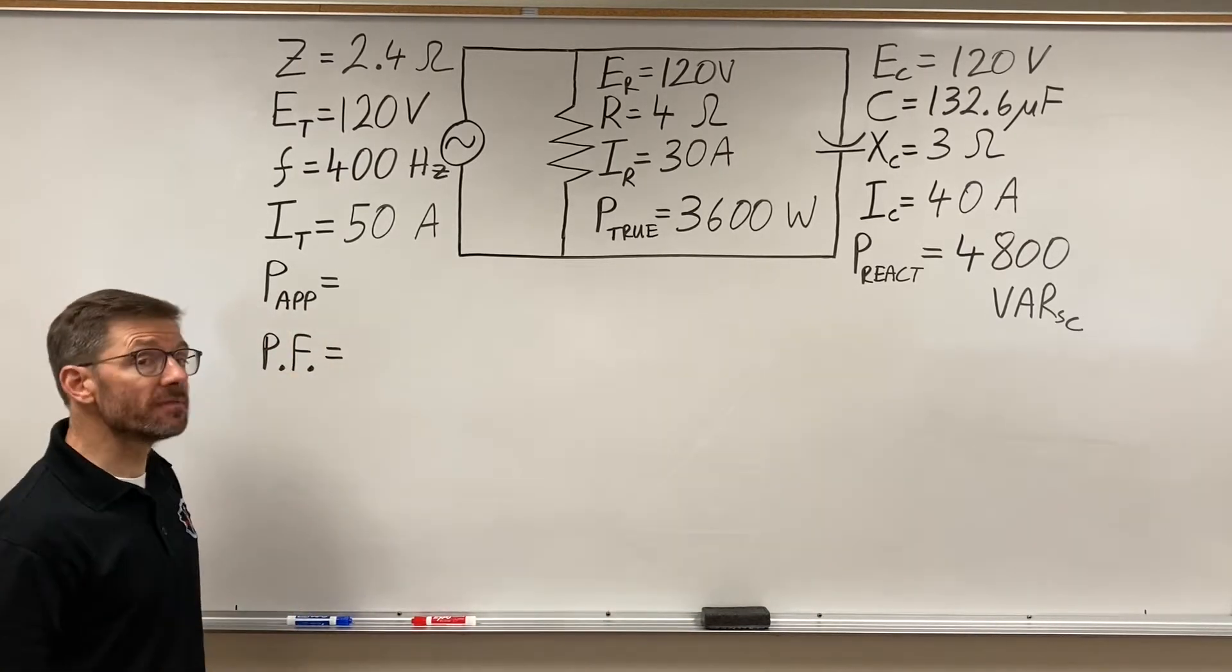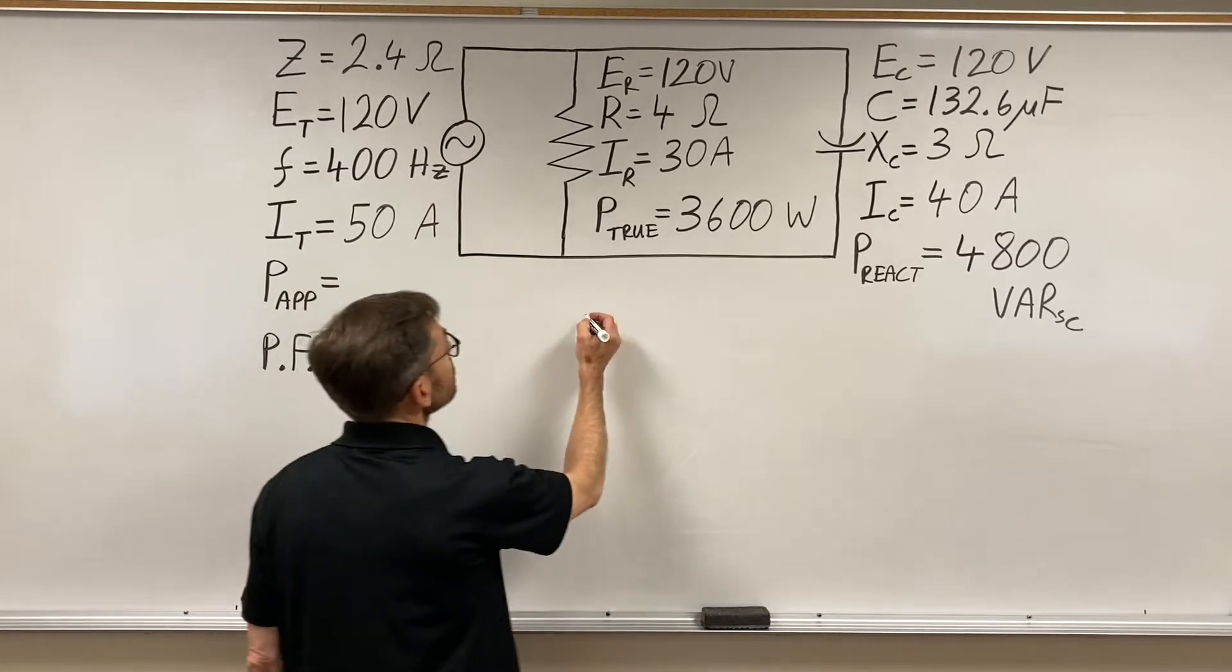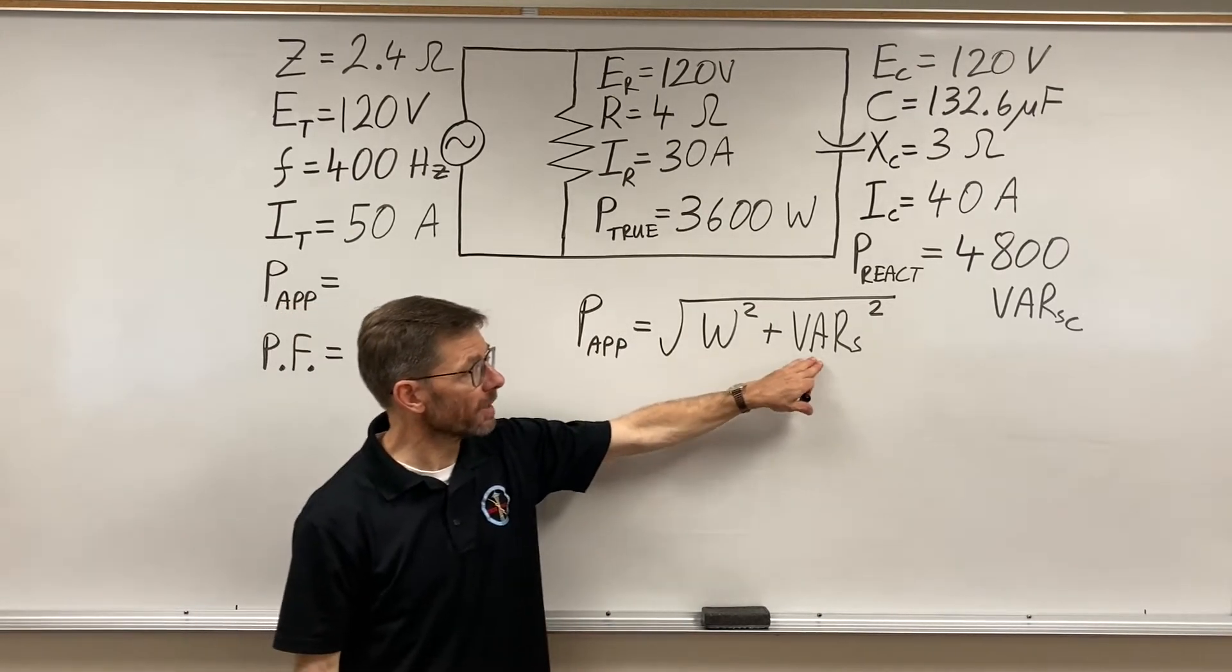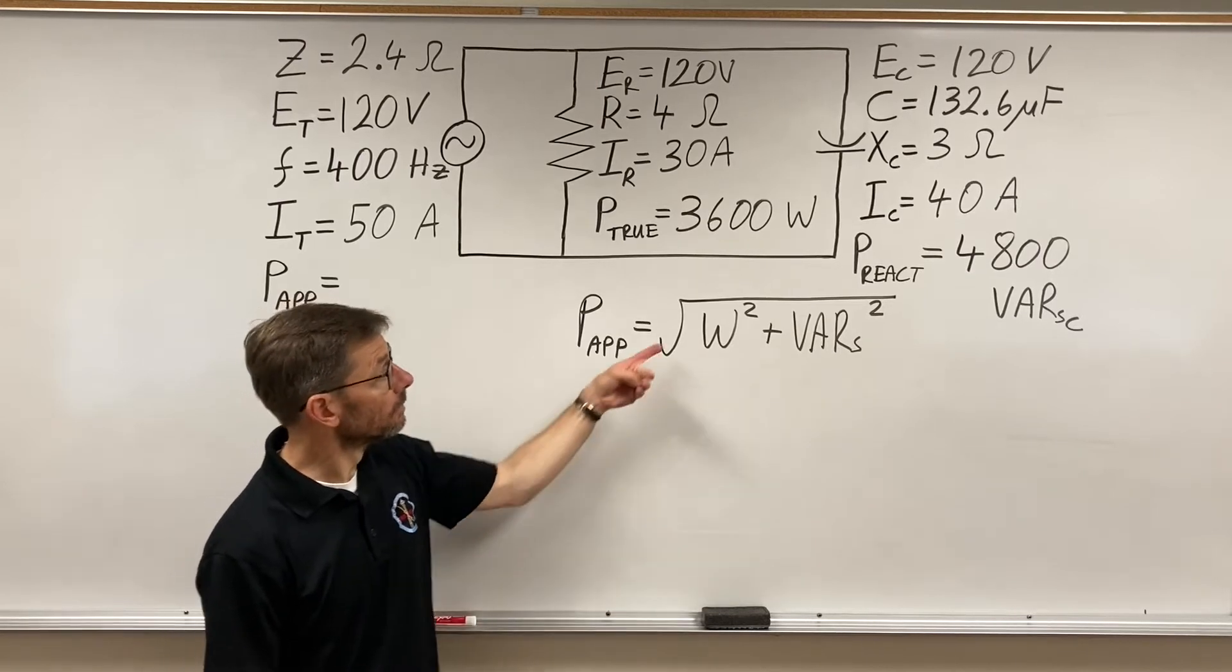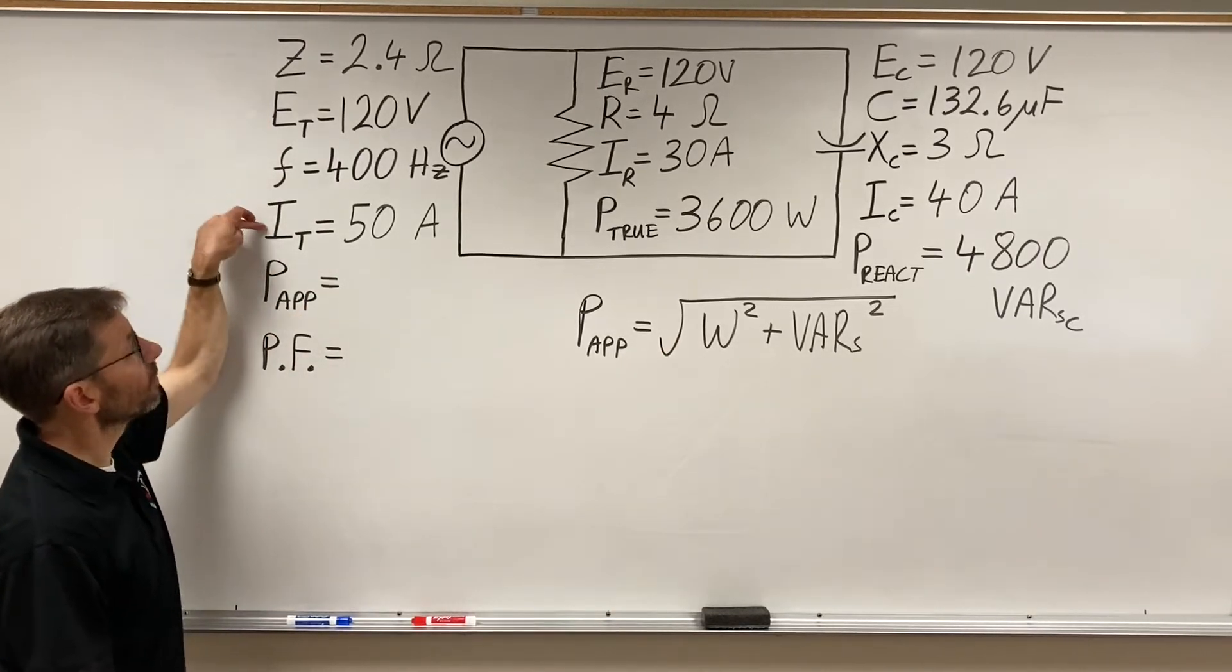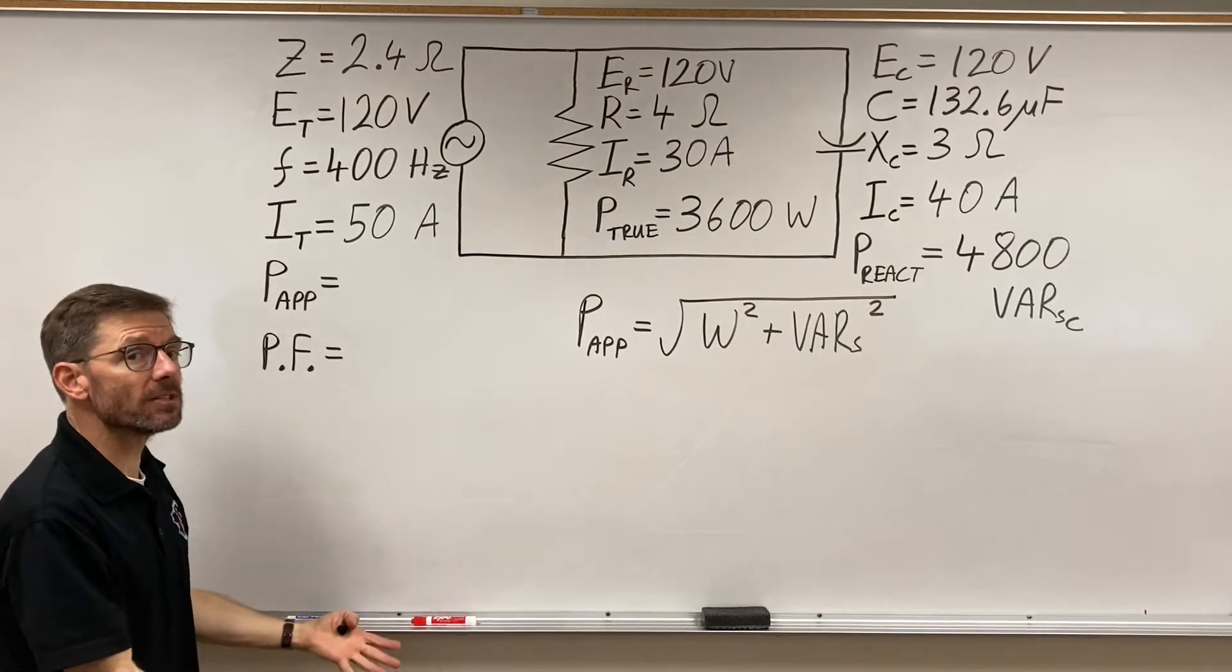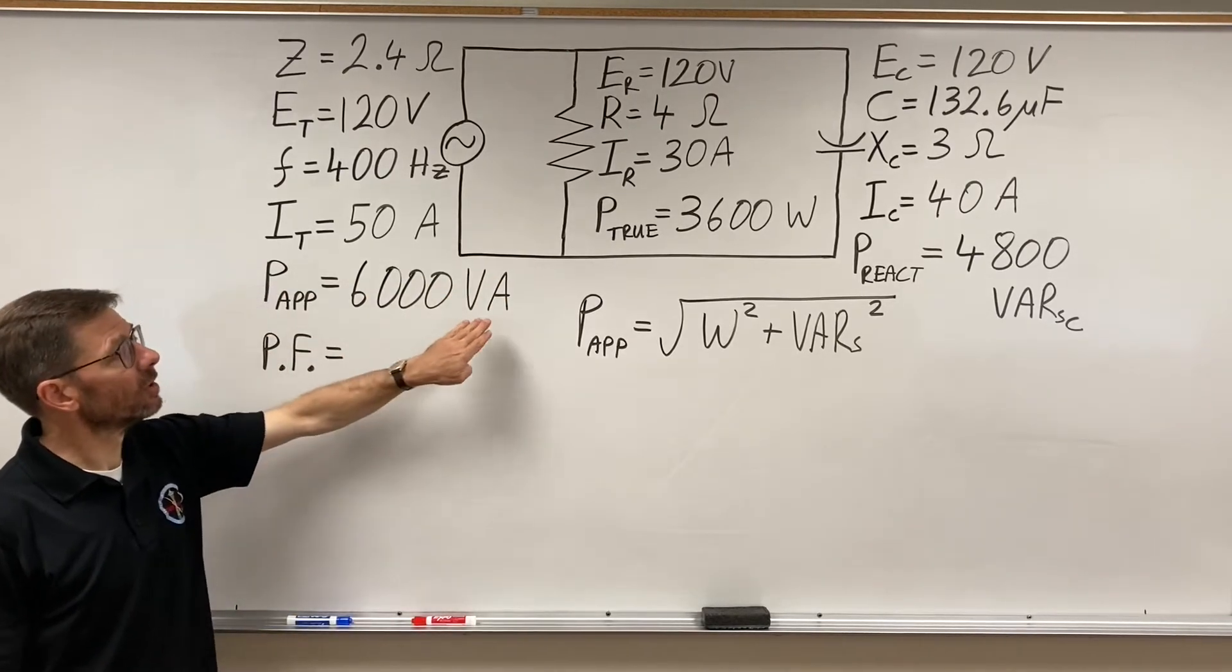We could add those vectorally, right? You look at your formula sheet, you'll see this formula. Apparent power is my watts squared plus my Vars squared from my power triangle. Yeah, I could do that, or I could go 120 times 50. And either way I do it, I'll get the same answer: 6,000 volt amps.